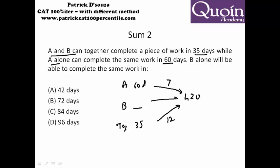So that means B will do 5 units of work because 7 plus this has to be 12. So number of days taken will be 420 upon 5, which will be 84 days.